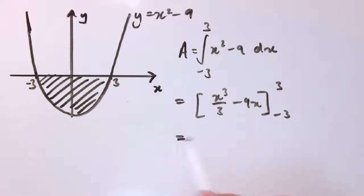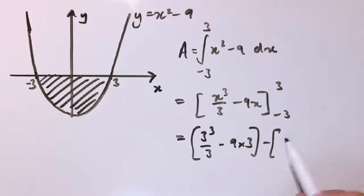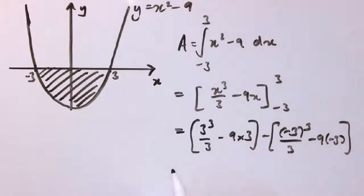So what we'll use is substituting 3, so I get 3³/3 - 9×3, and I subtract what I get when I substitute in -3. So let's work out what this is. So this is 27/3, that's 9, minus 27, so that's -18.